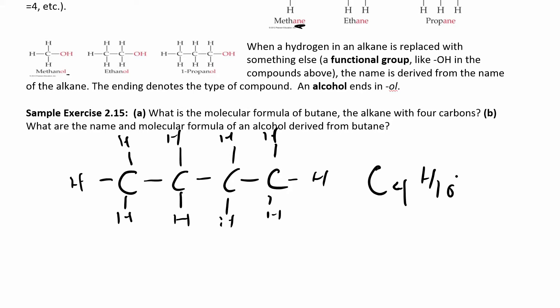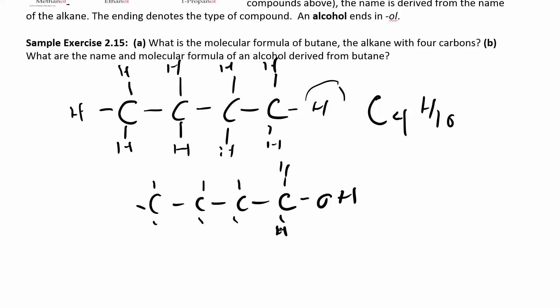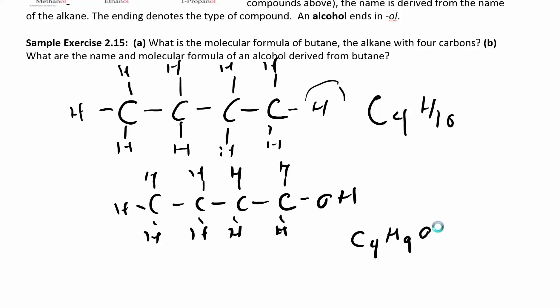To turn butane into an alcohol, drop one hydrogen and replace it with an OH group. So instead of C4H10, you have C4H9OH. We write the OH separately to make clear that you have an alcohol rather than some other functional group.